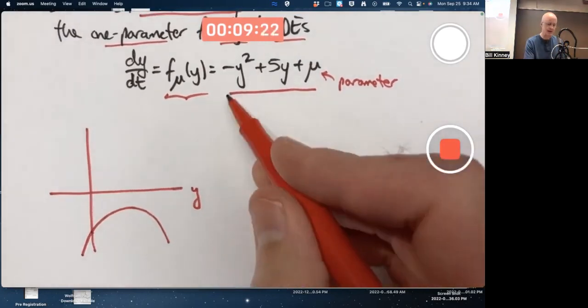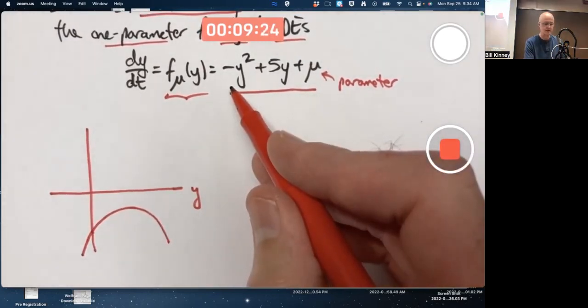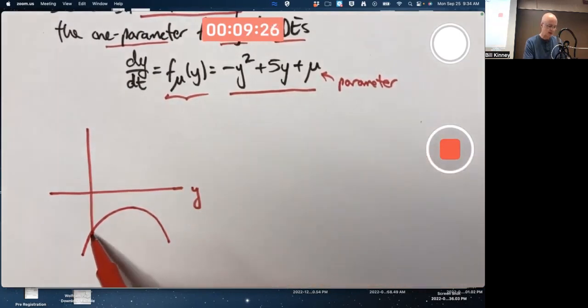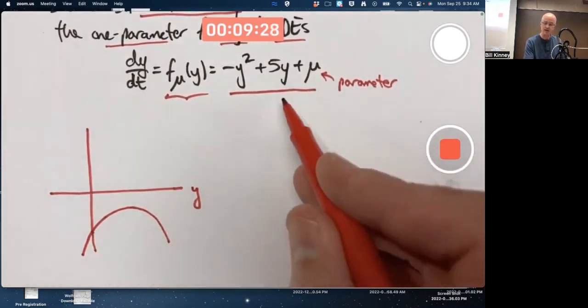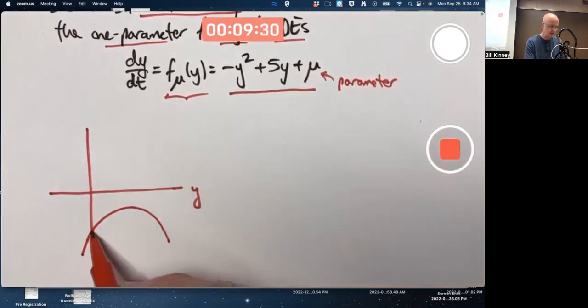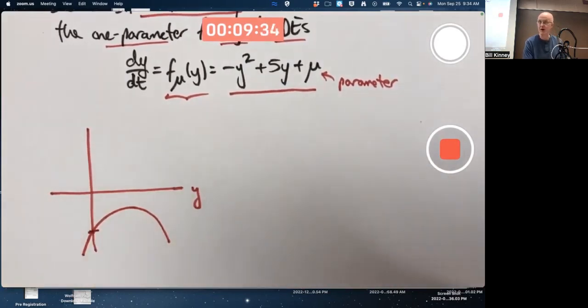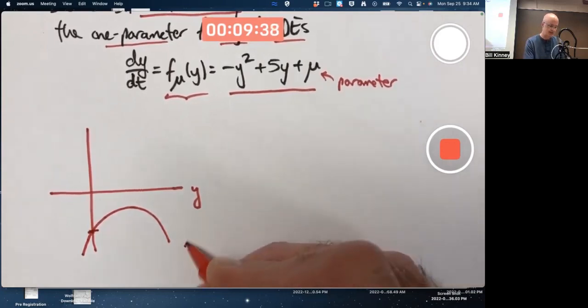Again, it's upside-down because the coefficient of y squared is negative. I do know the slope right there is going to be 5 because it's the coefficient of y, and mu is going to be the vertical axis intercept. I shouldn't call it a y-intercept there. So this is when mu is sufficiently negative.